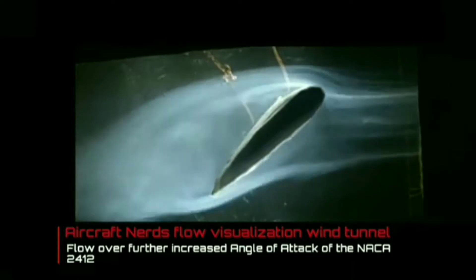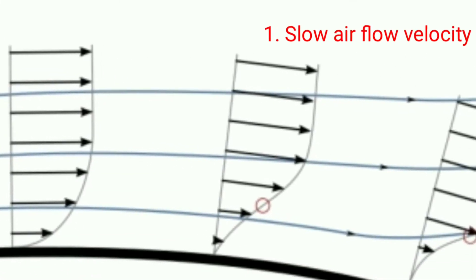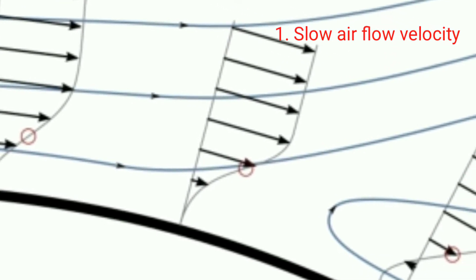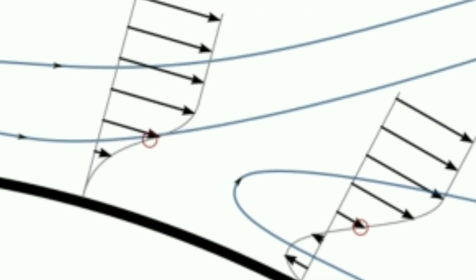There are mainly two reasons for the flow separation. One reason is slow airflow velocity. Slow airflow loses its energy due to friction on the wing. This results in flow separation.